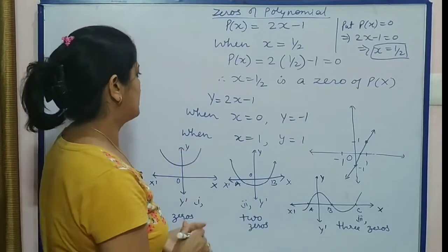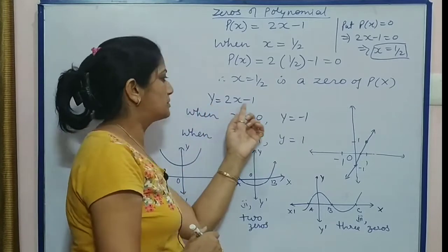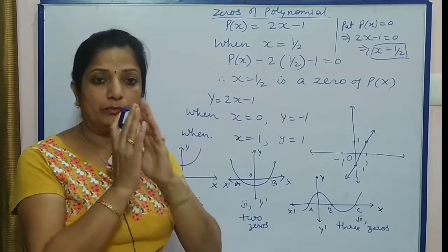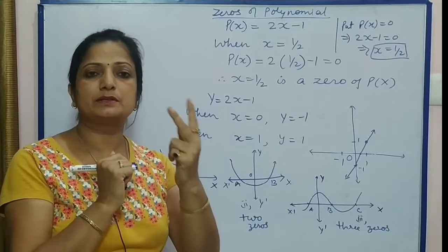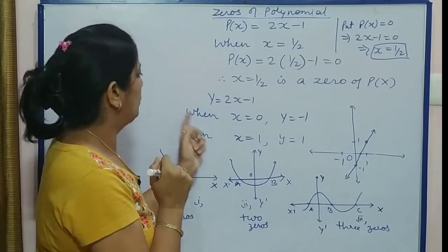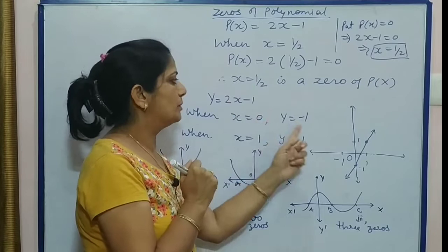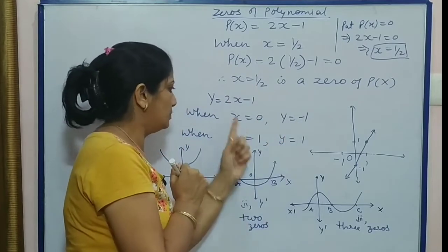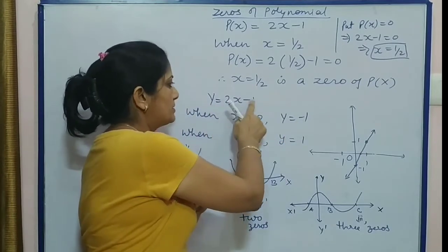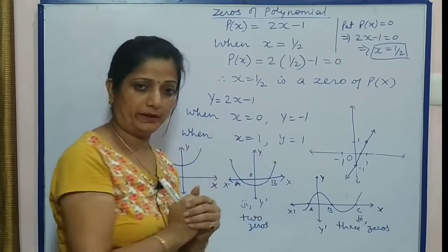Geometrical meaning kya hai iska? Suppose y = 2x - 1. When we calculate two points, at least minimum: when x = 0, what is y? y is -1. When x = 1, what is y? y is 2 - 1, that is 1.